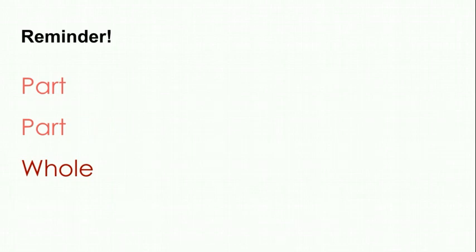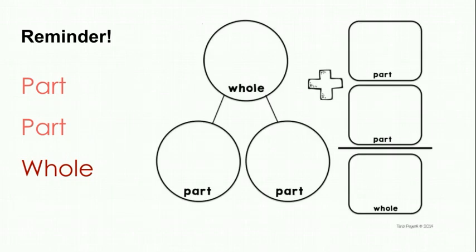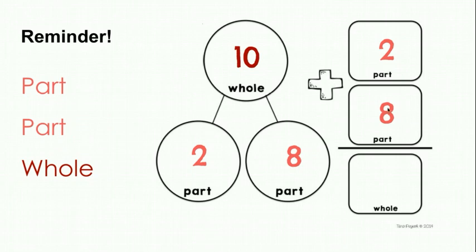This reminder is about the key vocabulary: part, part, and whole. We've seen this before when it comes to number bonds. We know that our two parts — for example, two and eight — create our whole. Two plus eight gives me my whole of ten. That works the same in a standard addition problem: part plus part equals whole. It also works for subtraction. Ten minus two equals eight — whole minus part equals part. Ten minus eight also equals two. So these number bond numbers work as a fact family. This also goes for tape diagrams.